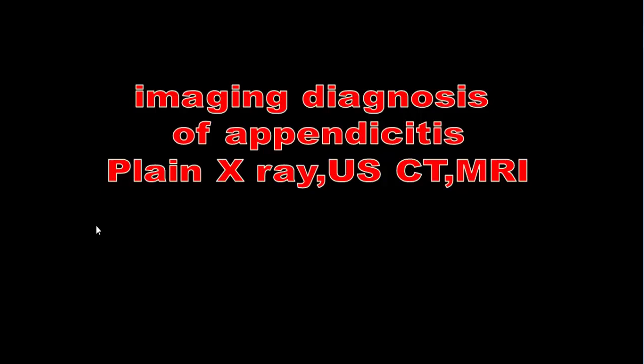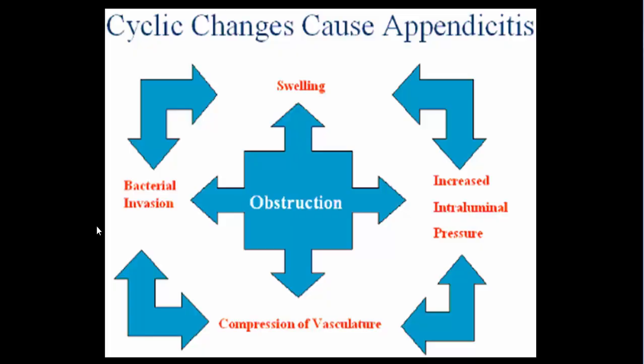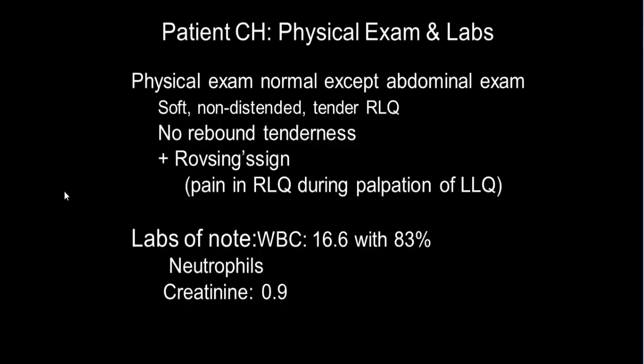This lecture covers imaging diagnosis of appendicitis, including the role of plain X-ray, ultrasound, CT, and MRI. The cyclic changes causing appendicitis include obstruction as the main cause, leading to swelling, bacterial infections, compression of vasculature, and increased intraluminal pressure — all of which contribute to the development of appendicitis.